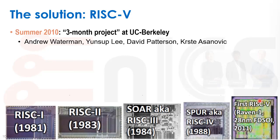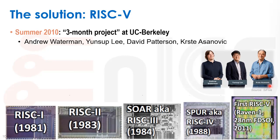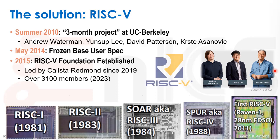In the summer of 2010, there was a three-month project at Berkeley. Krste Asanović, a star computer architect at Berkeley, gave two students — Andrew Waterman and Yunsup Lee — a challenge to build the fifth version of a RISC architecture developed at Berkeley. You have the RISC-1 developed by David Patterson, who oversaw the project, and the RISC-V architecture developed by these two students. In May 2014, it had already attracted interest from Google and Nvidia, and they froze the base user spec. In 2015, they established the RISC-V Foundation, now led by Calista Redmond, with over 3,100 members today.